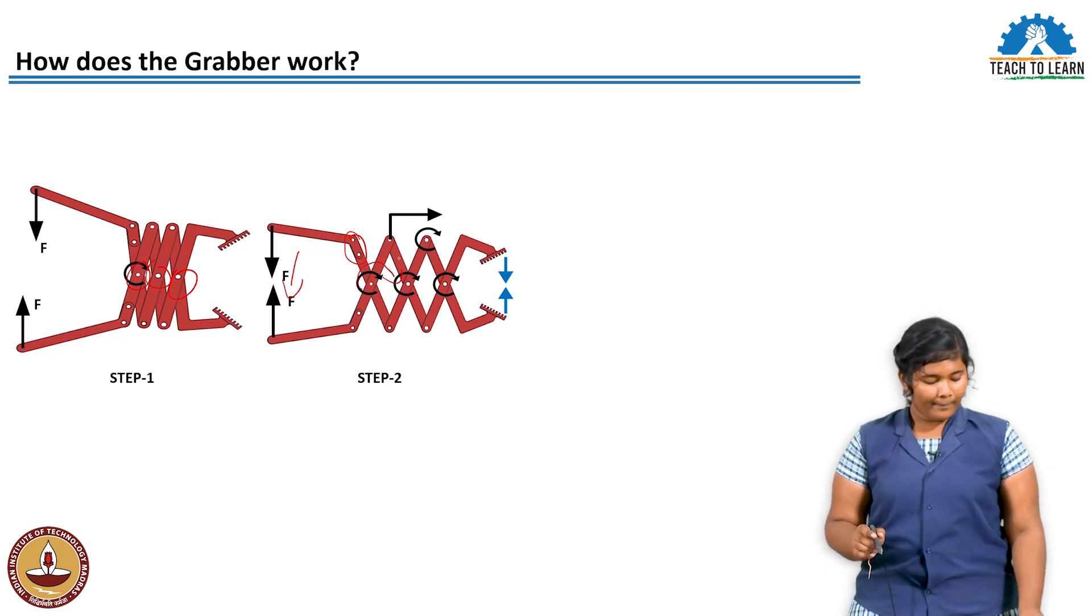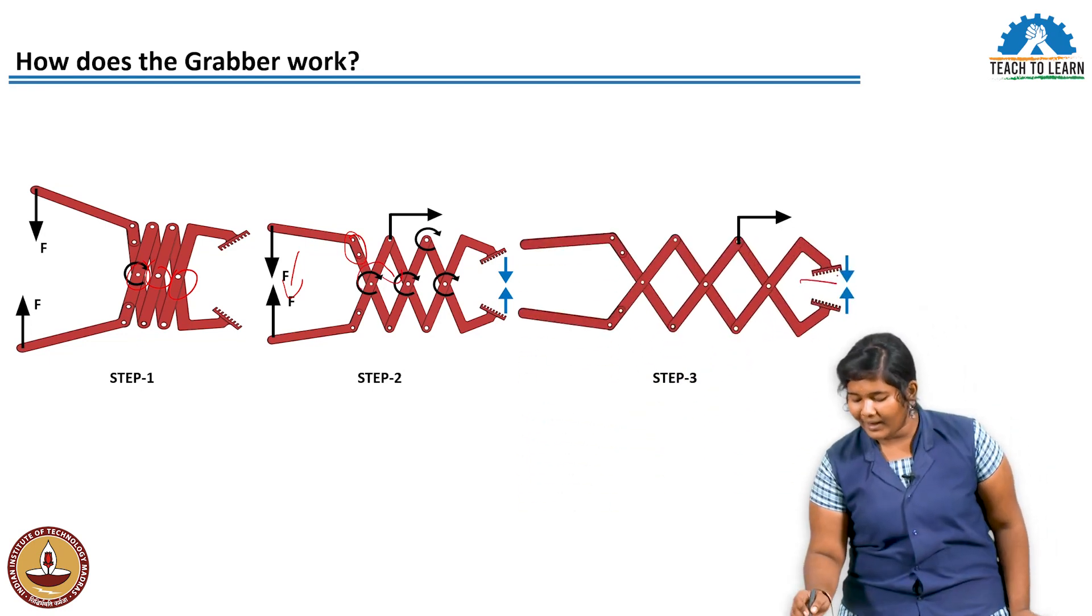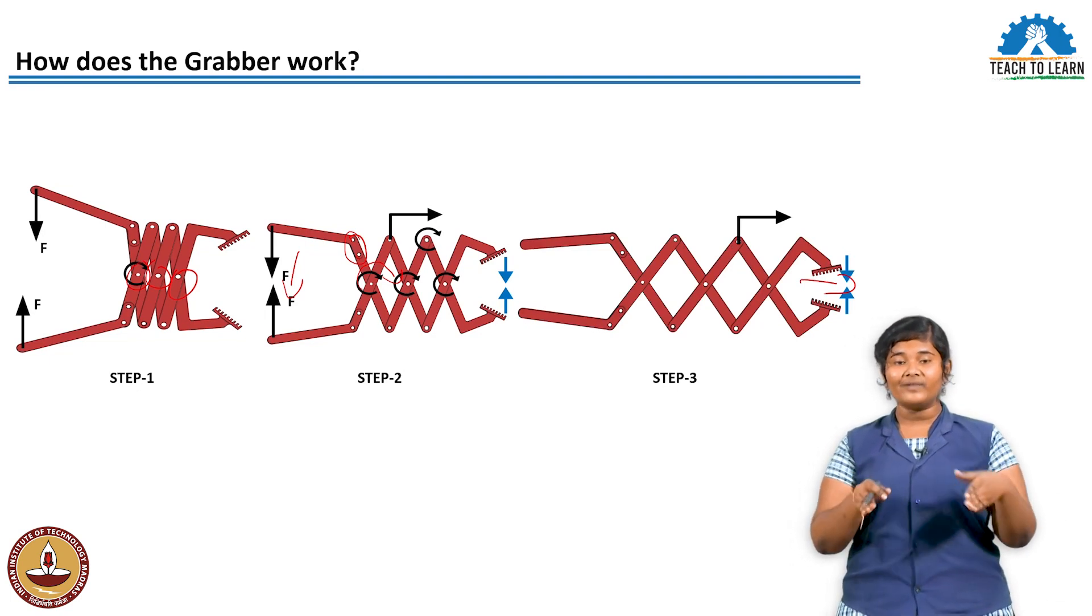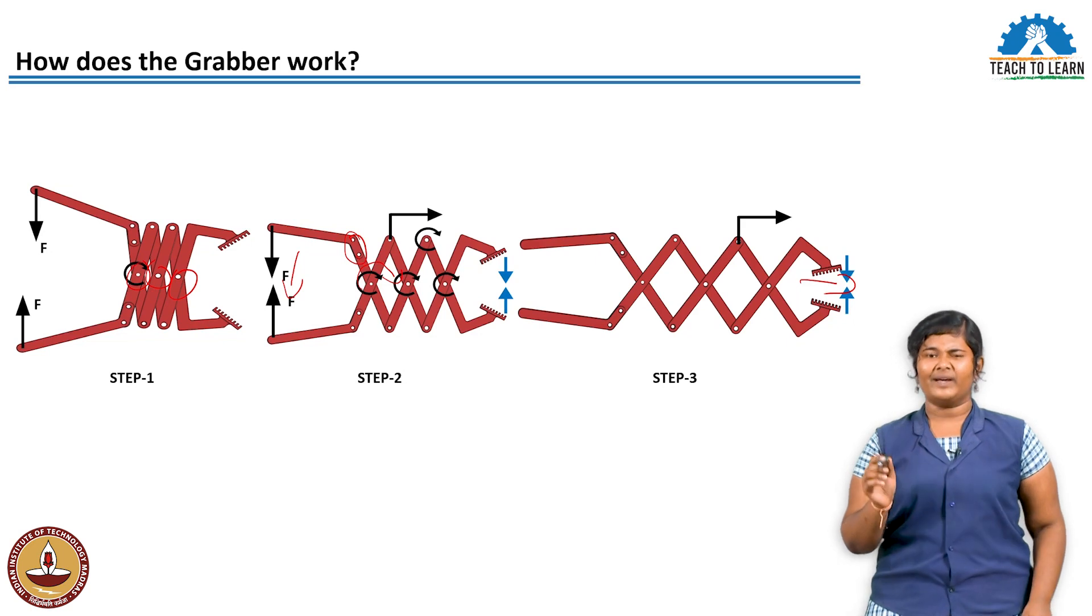The grabber converts rotational motion to linear motion. It moves forward. Imagine an object you want to hold - the grabber can grip and reposition it.